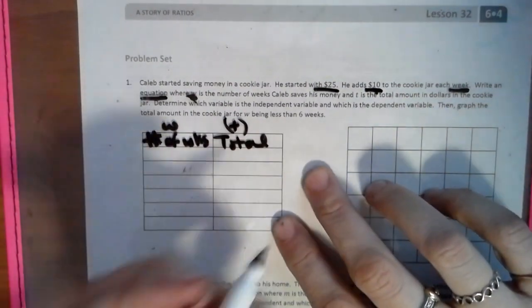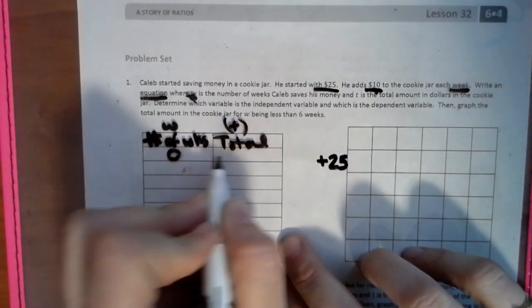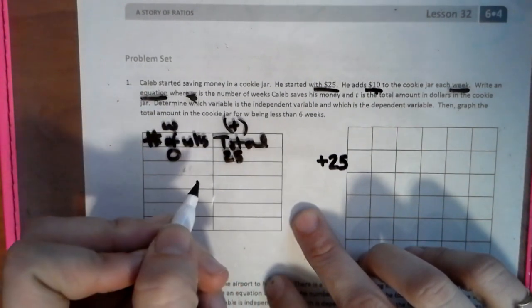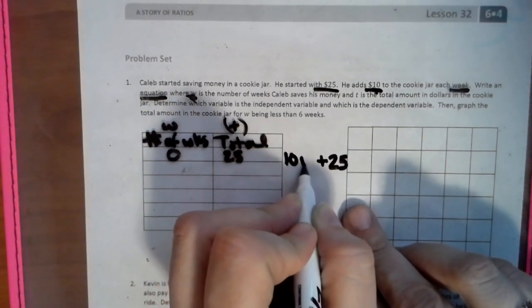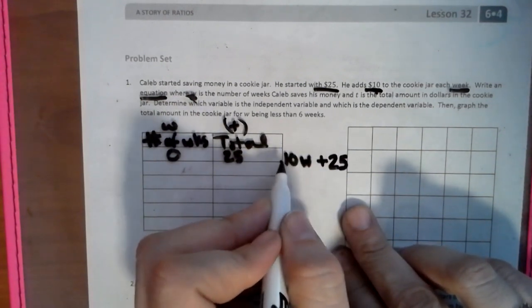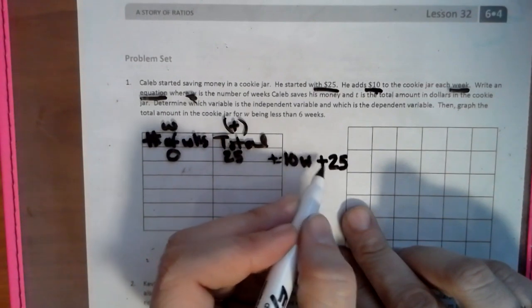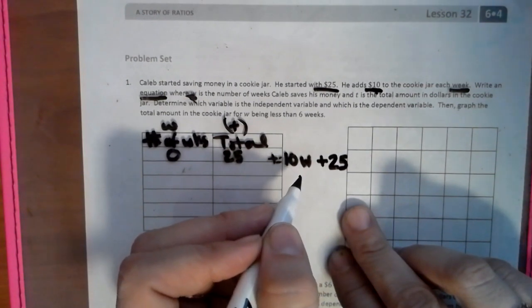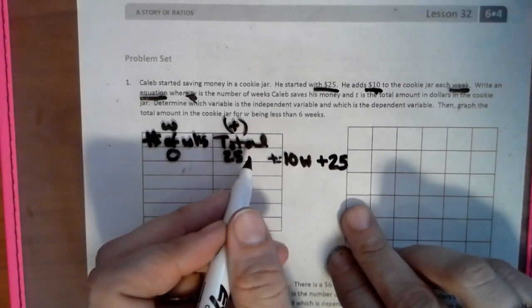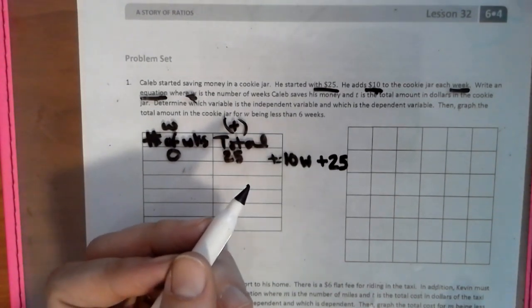When we're talking about an equation, it says he starts with $25. So that's like zero weeks, he still has $25. He's going to add $10 each week. So $10 per week. There's our expression, and we can set it equal to T for the total, and now we have an equation. So T equals 10W plus 25, 25 being the base that he starts with. The amount of money he earns depends on the number of weeks he works. So the independent variable here is weeks, and the amount of money in the cookie jar is the dependent, because the money depends.